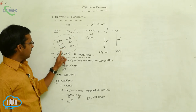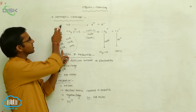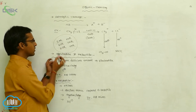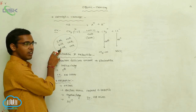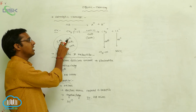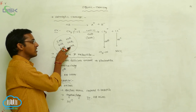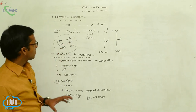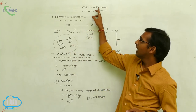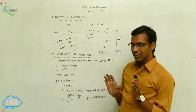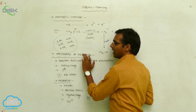Here, E means electrophile, N means nucleophile, and F means free radical. Free radicals are formed through homolytic cleavage. So the names are: electrophilic addition reaction (EAR), electrophilic substitution reaction (ESR), free radical substitution reaction (FSR), nucleophilic substitution reaction (NSR), free radical addition reaction (FAR), and nucleophilic addition reaction (NAR). In total, nine types of reactions are involved in organic chemistry, and organic reactions are initiated by either an electrophile or a nucleophile.